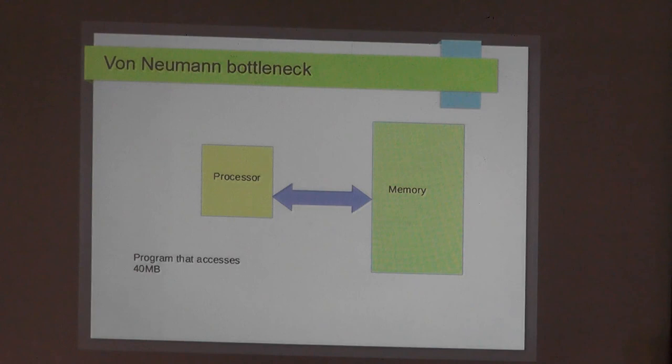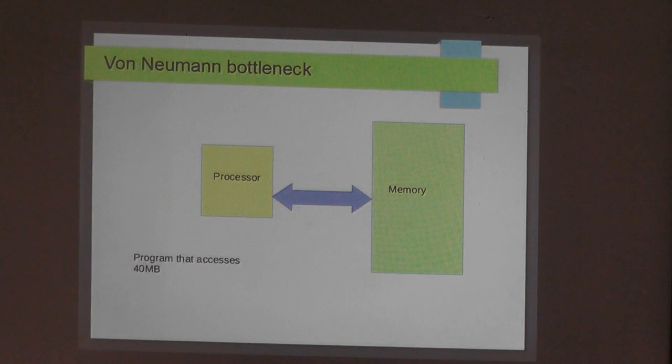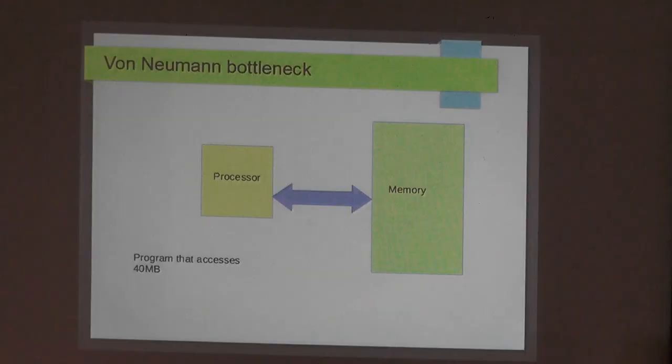What you have to keep in mind about a von Neumann computer — the kind we use today — is that its great advantage is that it can use completely different technologies for the processor and memory parts. You could have mercury delay lines for memory and tubes for the processor, or transistors and magnetic core memories. These days, processors are made in a completely different factory from the DRAM. But no matter how many gigabytes you have, you're only going to change one word at a time through the bus.